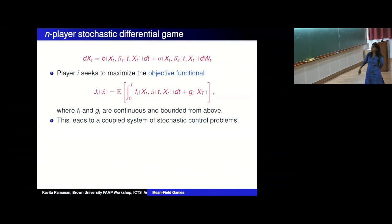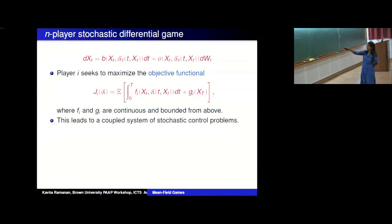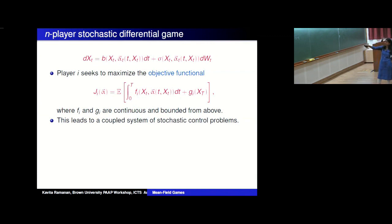For any control chosen in that nice space, the dynamics is well-defined. Each player i seeks to maximize an objective functional — an integral of a running cost f_i of the state and control, plus a terminal cost g_i. This is a standard cost functional in dynamic control theory. f_i is often called the running cost and g_i the terminal cost.